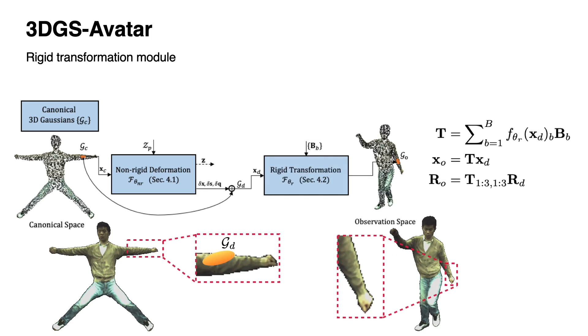Next, the Gaussians are mapped to the observation space via forward LBS, thus requiring no inverse skinning, which is typically difficult to compute robustly.